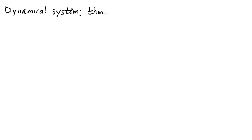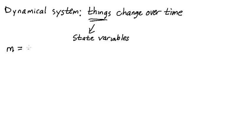A dynamical system is about how things change over time. The things that change are represented by state variables. In the simplest case, we're going to consider just having one state variable, and let's let M be the number